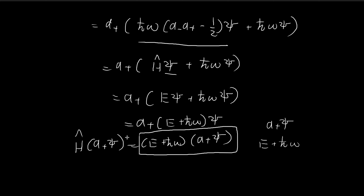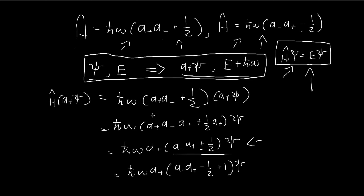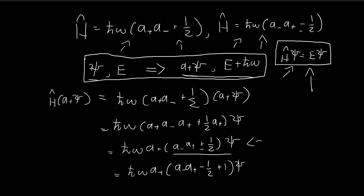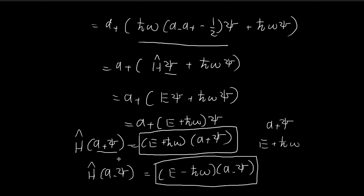You can do the exact same thing for a-minus ψ as well. I'm not going to prove it here — you can try that yourself — but after going through the same process, you'll find the energy level becomes E minus ℏω times a-minus ψ. So we've shown two things: if ψ satisfies the Schrödinger equation with energy level E, then both a-plus ψ and a-minus ψ are solutions to the Schrödinger equation with their corresponding energy levels.